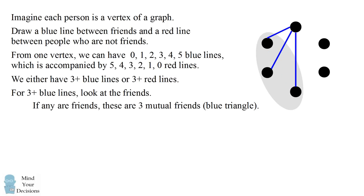What would happen if none of them are friends? Well, in that case, we would have to draw a red line between each of these three vertices. This would represent that these three people are not friends with each other on Facebook. So we formed a red triangle, which means these three people are mutual strangers. So we've proven that we will always have at least three mutual friends or at least three mutual strangers.